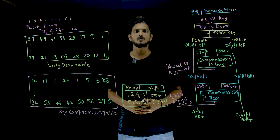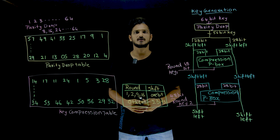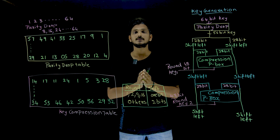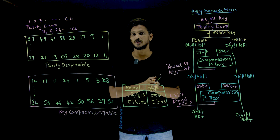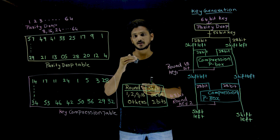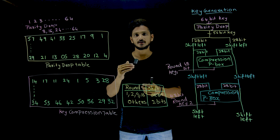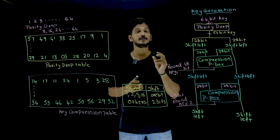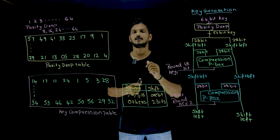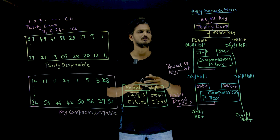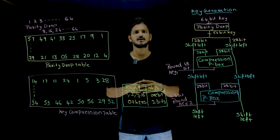Hi, welcome to Learning Monkey. I am Raghur here. In this class we will discuss about how keys are generated — 16 48-bit keys are generated in DES, and how they are going to be generated from our 56-bit key. That we are going to understand. It is a very simple class to understand, just follow the procedure.